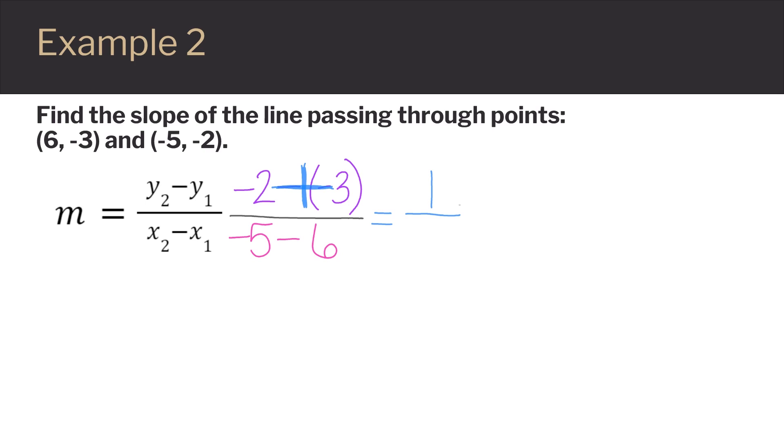And then in the denominator, we have negative 5 minus 6, which would give us negative 11. So then our slope is negative 1 over 11. Keep in mind, because our slope is a negative number, that would indicate that this line would go down and to the right if we were to plot it.